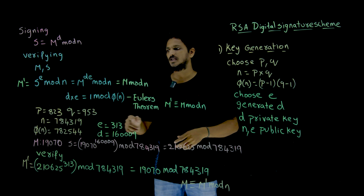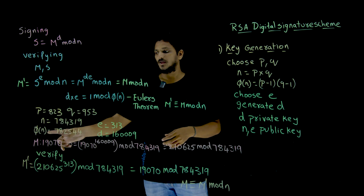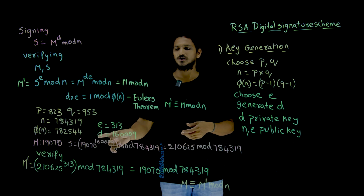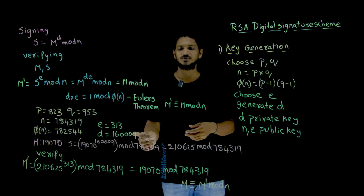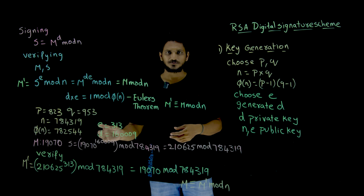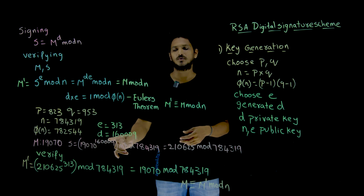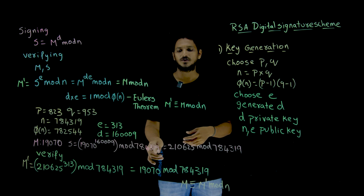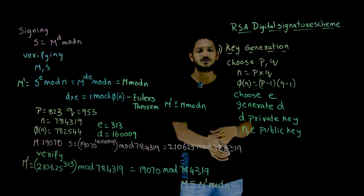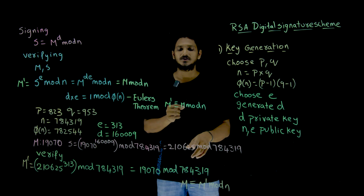Let us try to understand with an example. P is taken as 823, Q is 953, generating N equal to 784319. From this, Phi of N is equal to 782544. Generate a random number E equal to 313, and from this you can generate D equal to 16009. Now if you take the message — message M is equal to 19070 — we have to generate the signature: S equal to 19070 power 16009 mod 784319. This gives the output 210625 mod 784319, which is 210625. So the signature S is 210625.